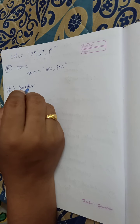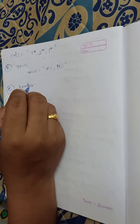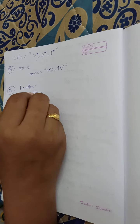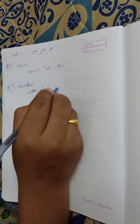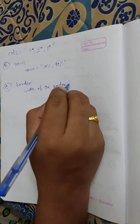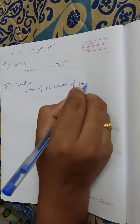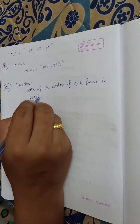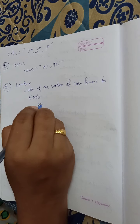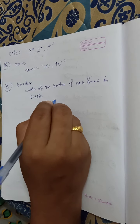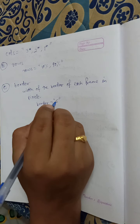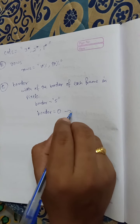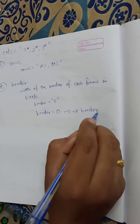The third attribute is 'border'. This attribute specifies the width of the border of each frame in pixels. For example, I can write border equal to 5. If I write border equal to 0, then this means no border.